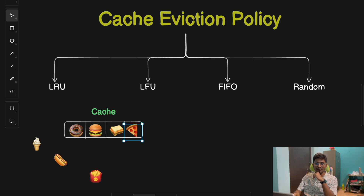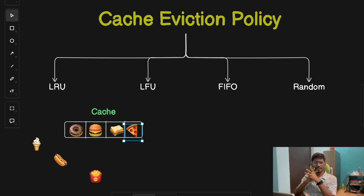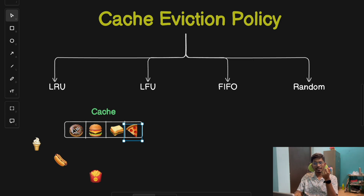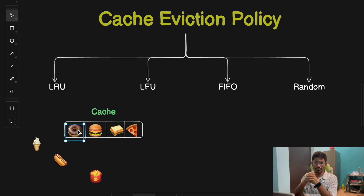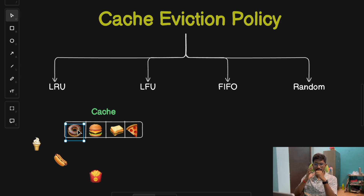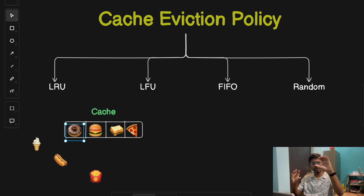The advantage of FIFO is that it is simple to implement without tracking frequency or recency. It works well in use cases where all data entries have an equal likelihood of being accessed. However, FIFO can lead to sub-optimal caching since it evicts the oldest data even if that data is still in high demand — for example, if donuts are frequently requested but get evicted simply because they entered the cache early, causing cache misses. FIFO can be effective in round-robin load balancers where old requests are cycled out regularly.